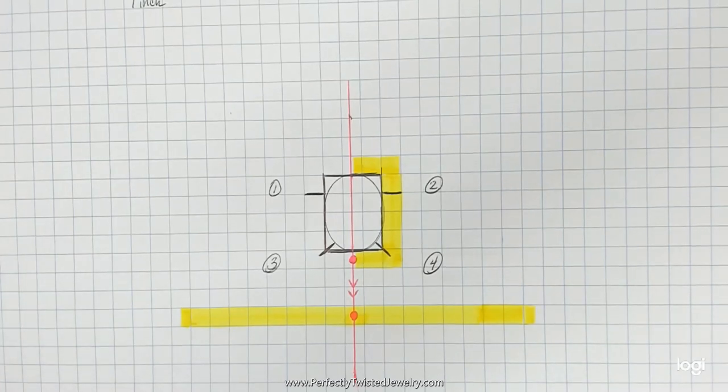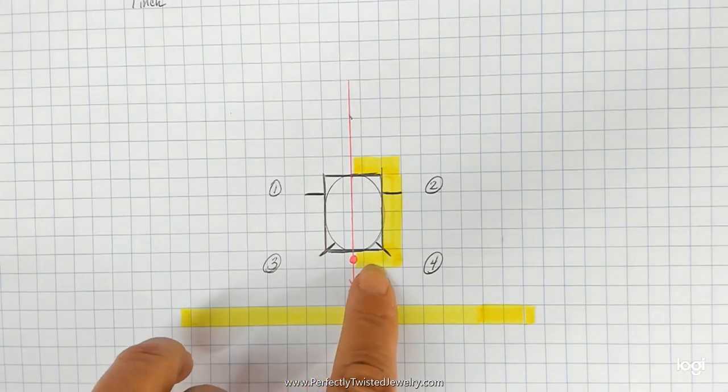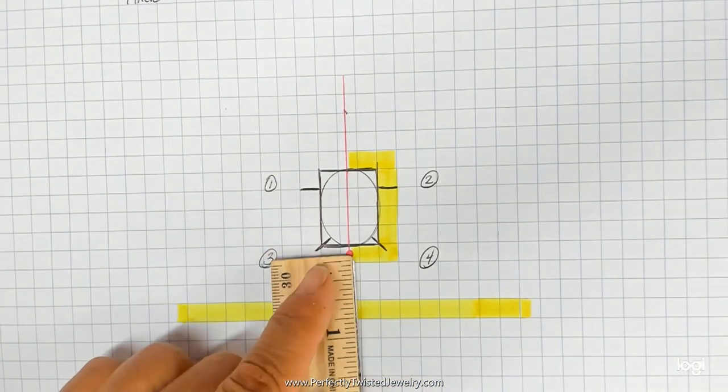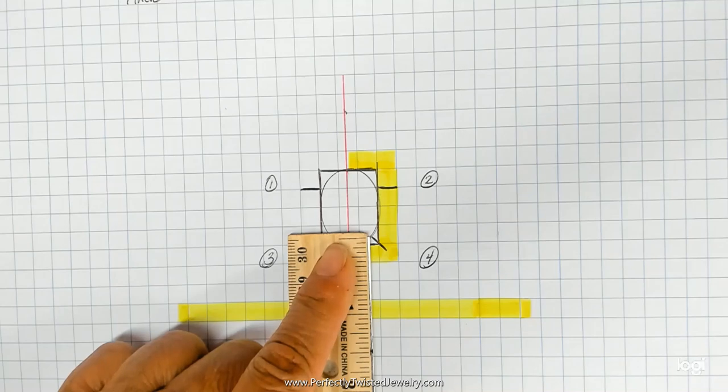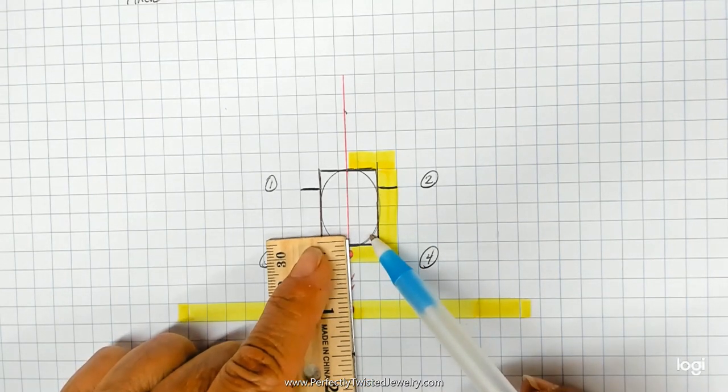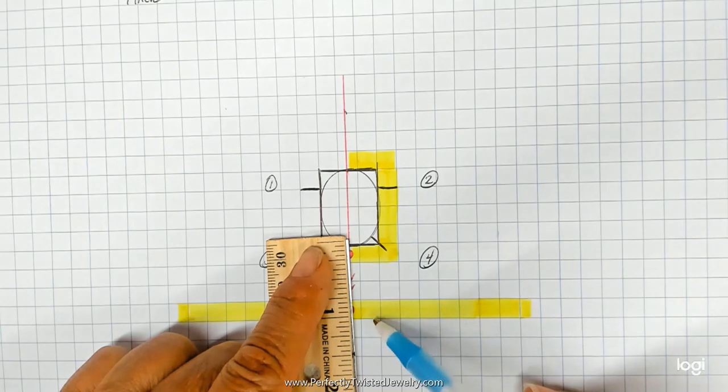From here, it's really easy for me to translate where these prongs live. Focusing on the two bottom prongs, prong three and four, I'm going to draw a line from where this prong touches the cabochon right here down to my map.